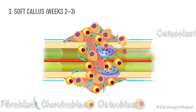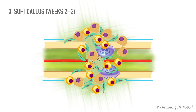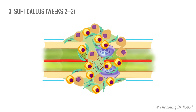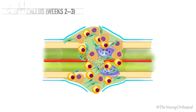The granulation tissue is gradually replaced with fibrous connective tissue and cartilage. The thick cellular mass, with its islands of immature bone and cartilage, forms the callus or splint on the periosteum and endosteal surfaces. The fracture ends become sticky and movement is reduced.